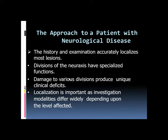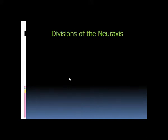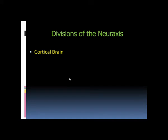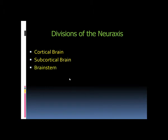Neurological examination follows a systematic sequence: we start with higher cortical functions, proceed to cranial nerves, cerebellar functions, motor system, sensory system, deep tendon reflexes, and pathological reflexes. The examination should evaluate the entire neuraxis.